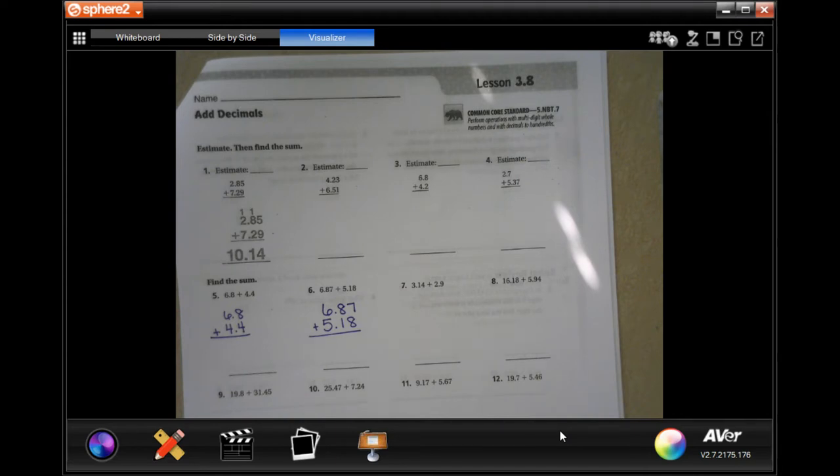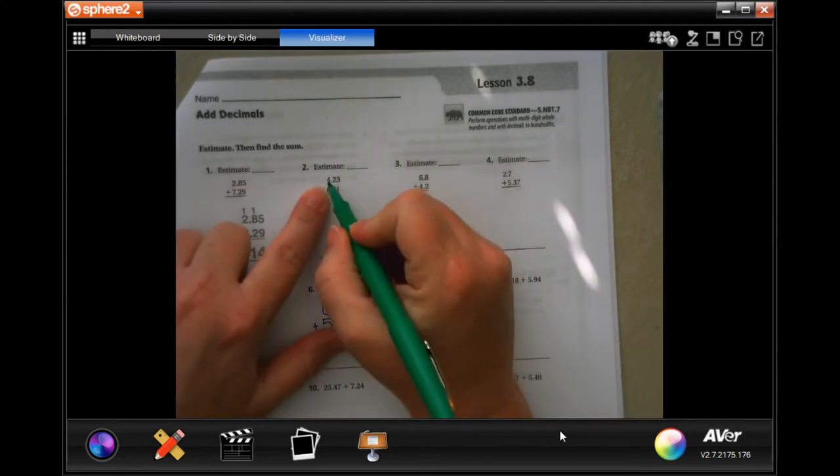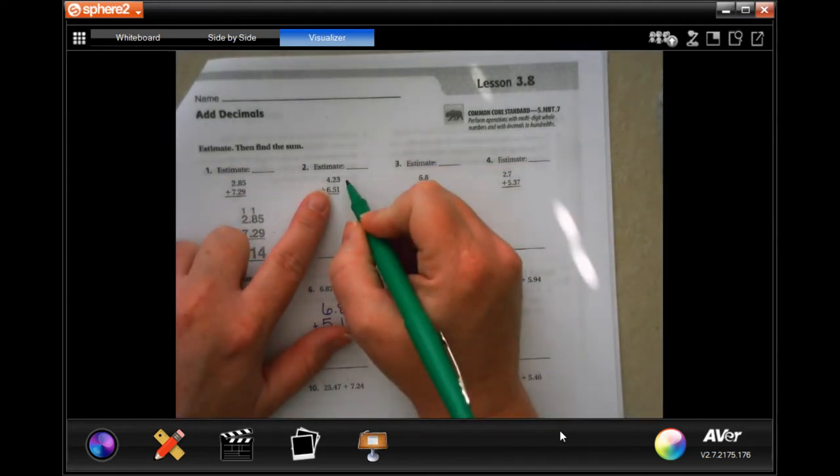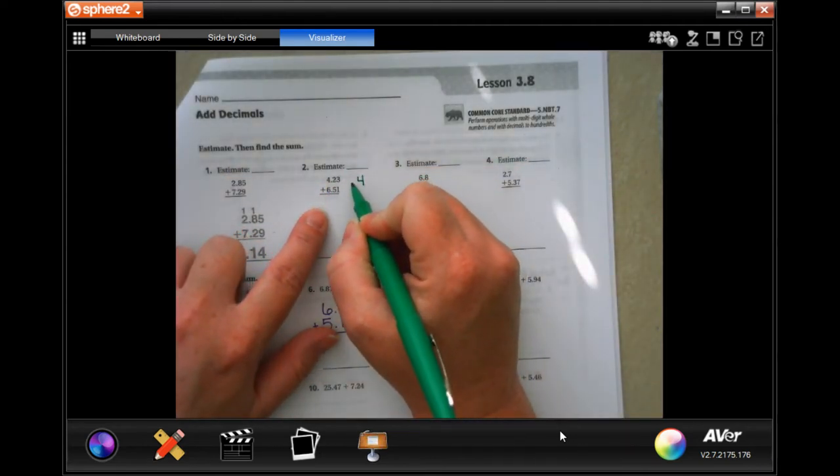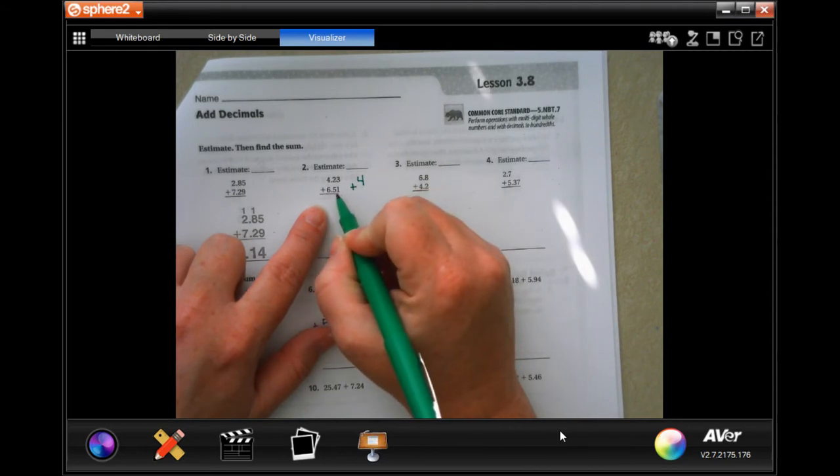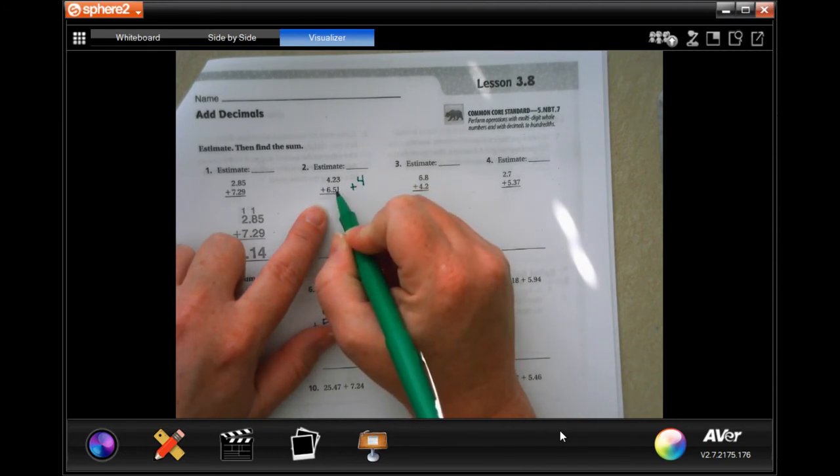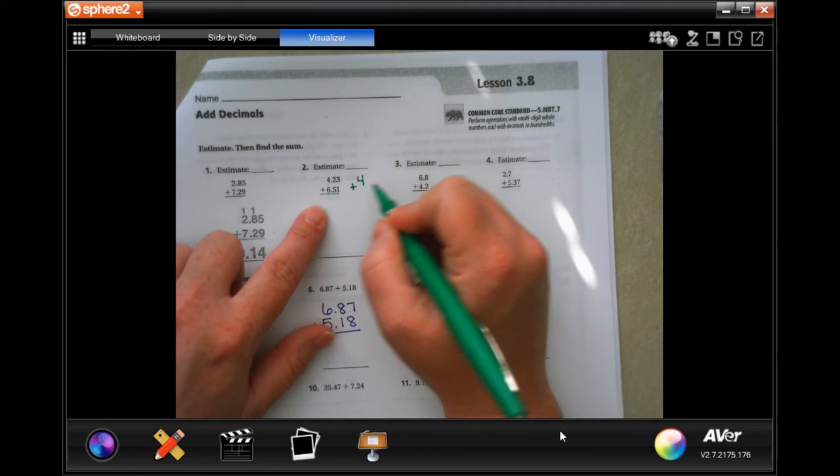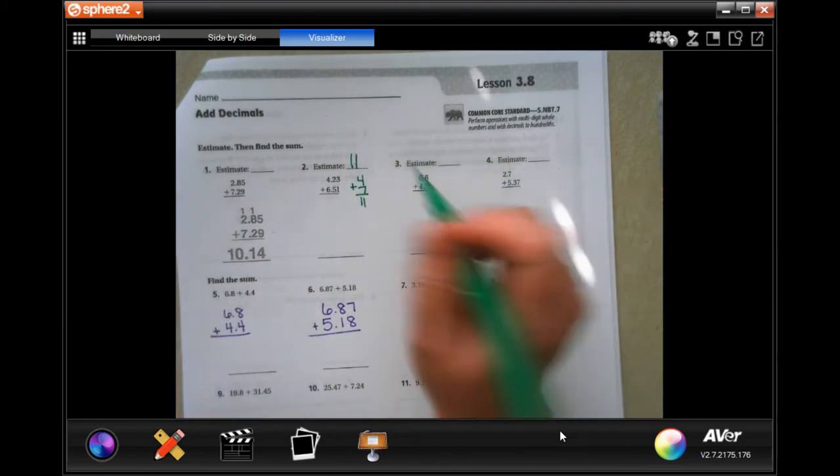So first we need to estimate. Well, 4.23 would just round to four, and 6.51, well that five is bigger, it's five or bigger, so it tells the six to go up to seven. Four plus seven is eleven. Your estimate is eleven.